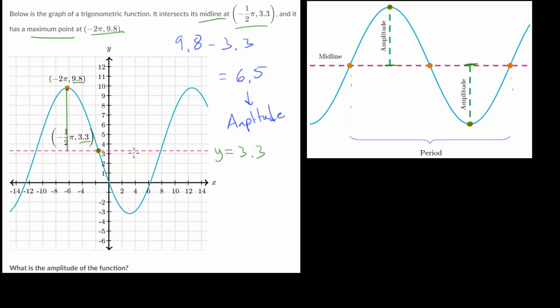We can roughly check this by looking at a minimum point. If we take our amplitude and subtract it from this midline value, then we can roughly approximate what the minimum value should be here and visually confirm if this amplitude of 6.5 actually makes sense.